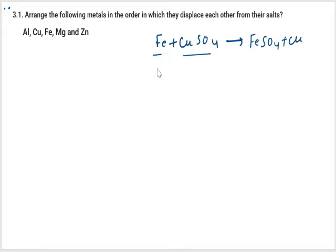If we do this reaction with copper and iron salt solution, what do we see? We see that this copper will not displace from the salt solution. What is the reason? I will tell you the reason. According to that reason, we will do 3.1 which is saying arrange the following metals in order in which they replace each other from the salt solution.